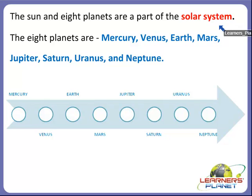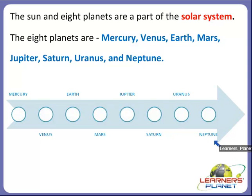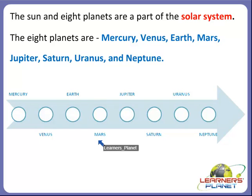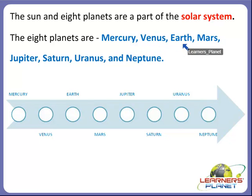So what are the names of the eight planets? They are Mercury, Venus, Earth, Mars, Jupiter, Saturn, Uranus, and Neptune. You can see all the names of the planets listed in serial order. You have to remember all eight planets in this order only.